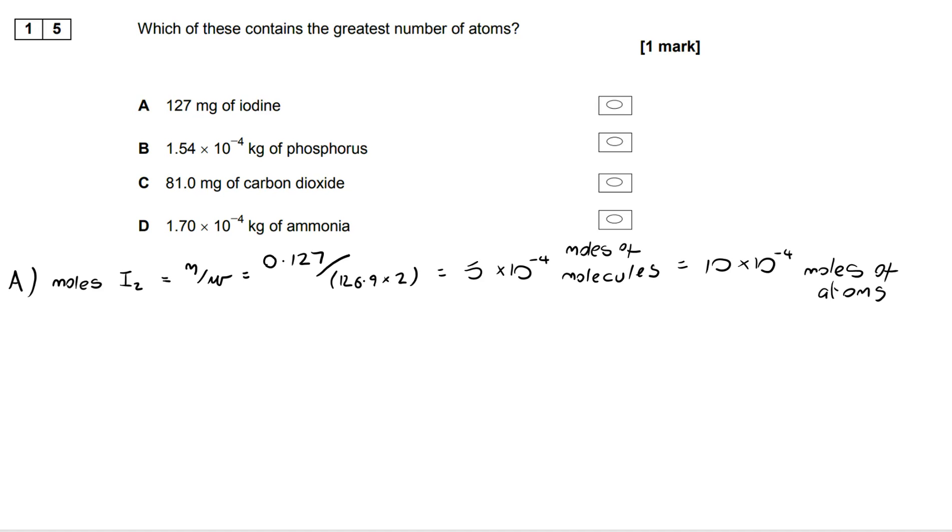We now do the same with each of the remaining three and compare those numbers of atoms. So for B, we've got phosphorus, which is 1.54 by 10 to the minus 4 kilograms, but we're multiplying by 1000 to get to grams, divide by 31, that's already in atoms, we get 5 by 10 to the minus 3 moles of atoms.